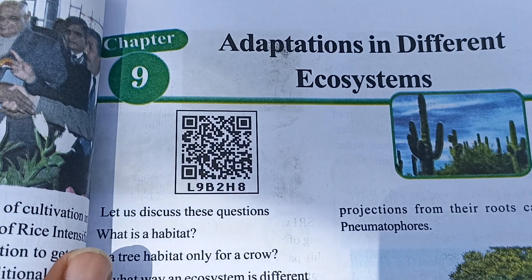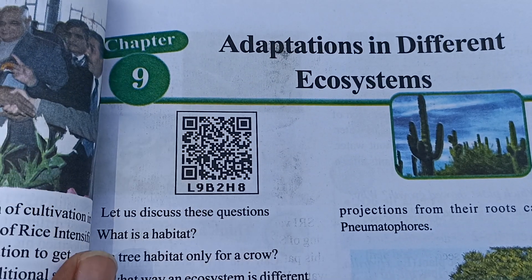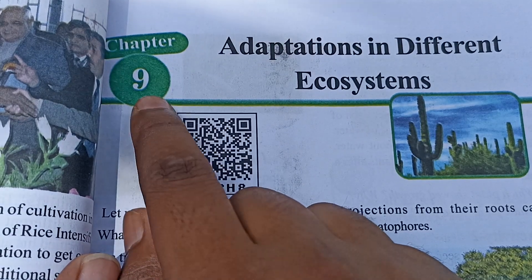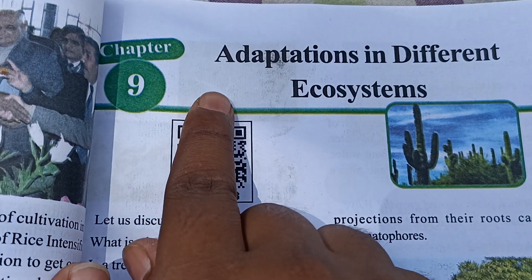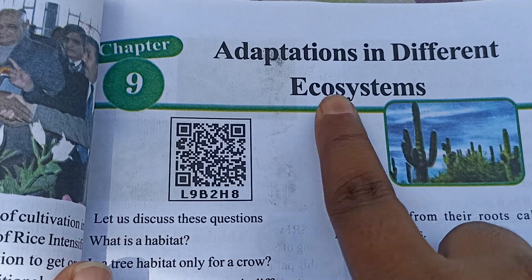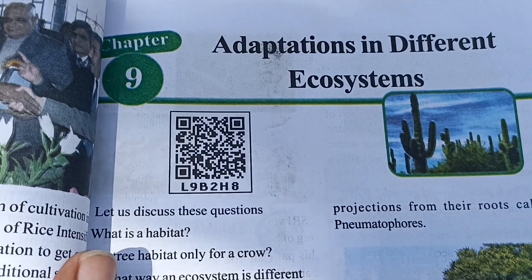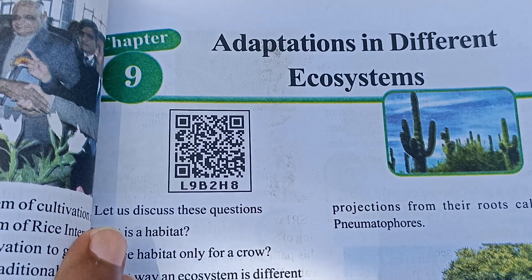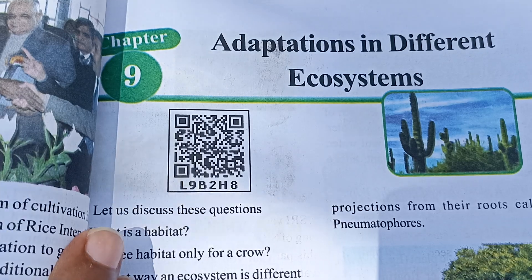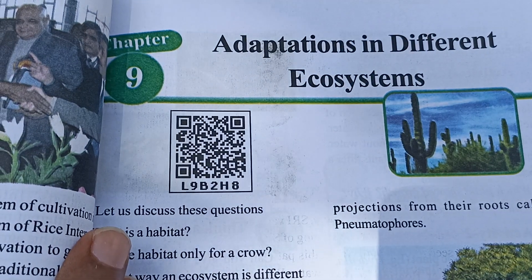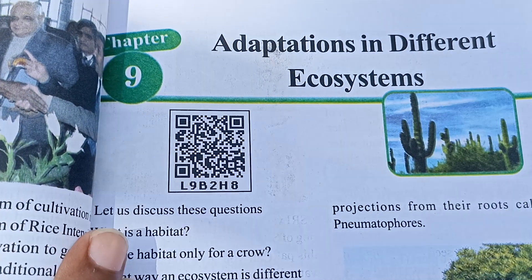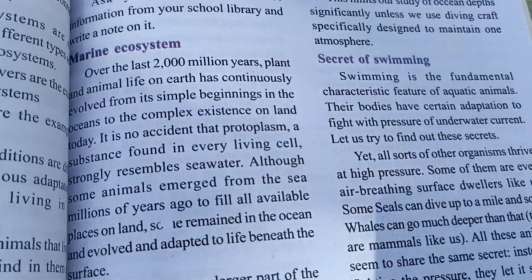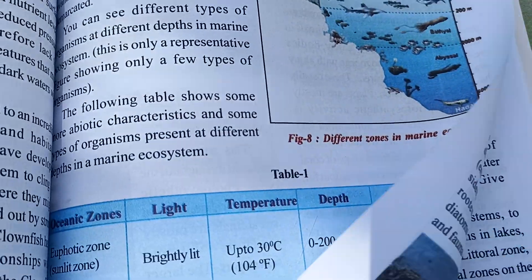Hello guys, how's it going? I hope everything is well. In this video we are going to see Class 9th Biology Chapter number 9: Adaptation in Different Ecosystems. We will see the question and answer of this chapter. First of all, let's see the questions and then we will move to the answers.